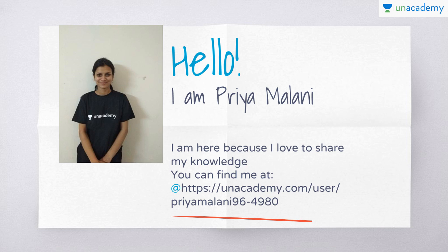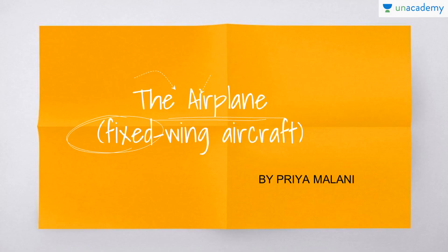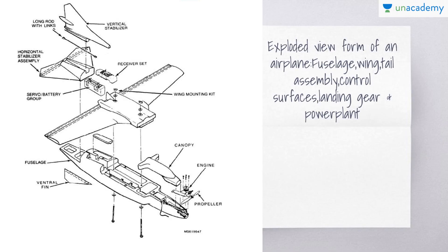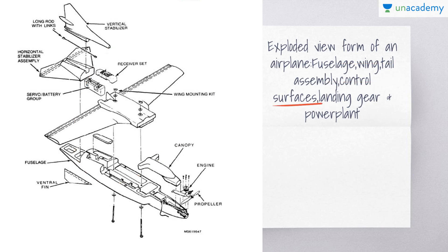Beginning with this chapter on the airplane — the fixed-wing aircraft — we'll cover the overall physical makeup of a typical airplane. The parts include the fuselage, wing, tail assembly, control surfaces, landing gear, and power plant. This is the exploded view of those parts.